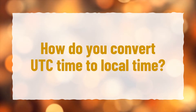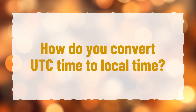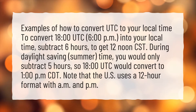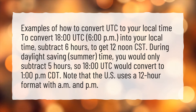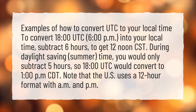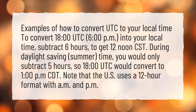How do you convert UTC time to local time? To convert 1800 coordinated universal time — 6 p.m. — into your local time, subtract 6 hours to get 12 noon CST.